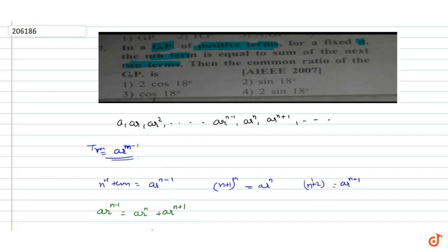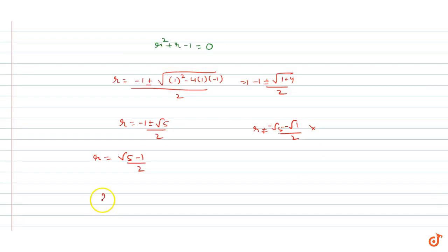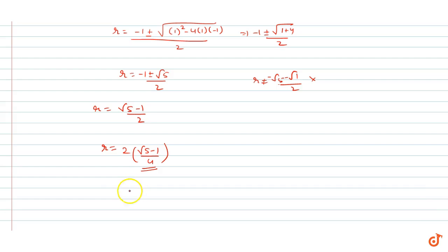Since the GP has positive terms, we take the positive root. So r = (√5 − 1) / 2. Therefore, the common ratio of the GP is r = (√5 − 1) / 2.